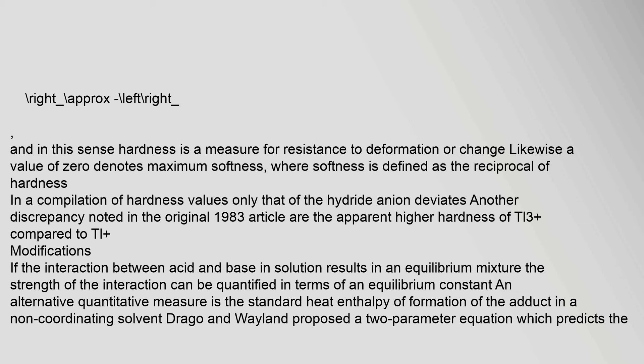In this sense, hardness is a measure of resistance to deformation or change. A value of zero denotes maximum softness, where softness is defined as the reciprocal of hardness. In a compilation of hardness values, only that of the hydride anion deviates. Another discrepancy noted in the original 1983 article is the apparent higher hardness of Tl³⁺ compared to Tl⁺.